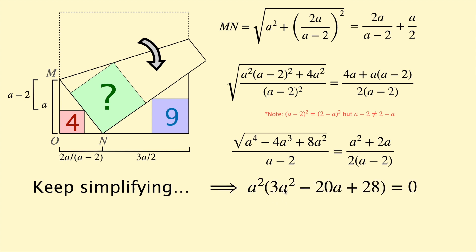A squared multiplied by 3A squared take 20A plus 28 equals 0. This gives you three solutions for A. A equals 0, 2 or 14 on 3. We can discount 0. Clearly A has some length, it's not 0. It's not 2 because the side length of this square is 2. So A is larger than 2. So the only valid solution here is 14 on 3.